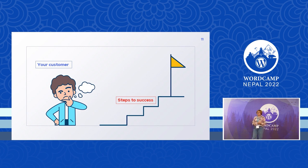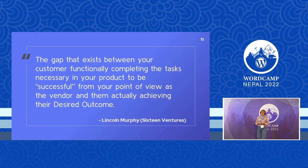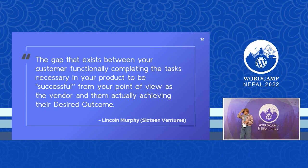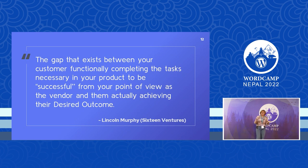Now let's see a more specific definition. This one is from Lincoln Murphy of 16 Ventures, who is a customer success expert. According to him, it is the gap that exists between your customers functionally completing the tasks necessary in your product to be successful from your point of view, and your customers actually achieving their desired outcome. Your customers may have found your product, purchased it, and completed all the steps — but still fail to achieve their desired outcome. That is your success gap as a business.